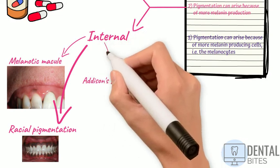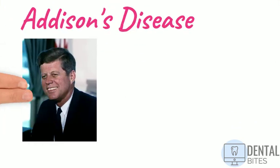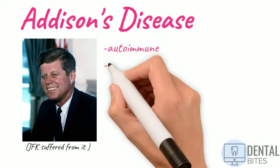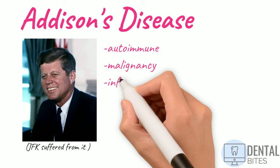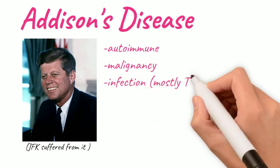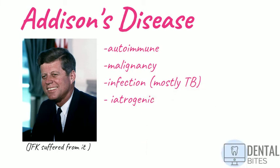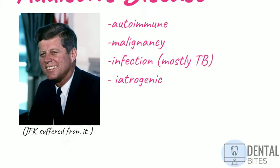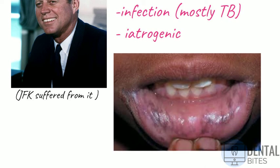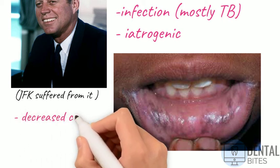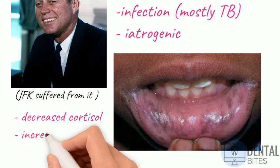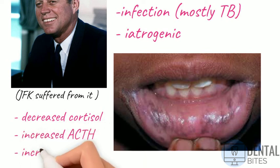Addison's disease, also known as primary adrenal insufficiency, is a condition where the adrenal glands don't produce enough cortisol and aldosterone. This is commonly caused by an autoimmune response in the UK, but it can also have other causes, for example malignancy or infection (usually tuberculosis), or iatrogenic causes where patients take long-term systemic steroids. Essentially, with Addison's disease, the reason there is hyperpigmentation is due to increased ACTH (adrenocorticotrophic hormone), which happens because of reduced cortisol levels, and this stimulates melanocytes to produce more melanin. To reiterate: low cortisol causes increased ACTH, which results in more melanin production by the melanocytes.